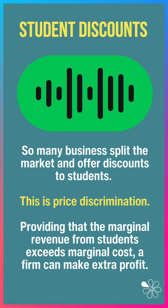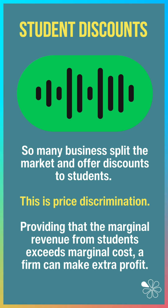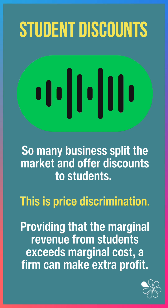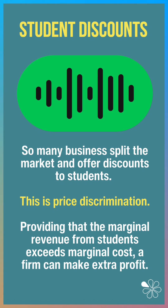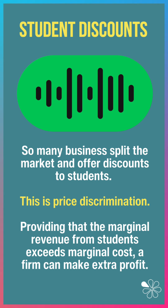This is third degree price discrimination. Providing the marginal revenue from students exceeds the marginal cost of supplying to them, a business can still make extra profit, turning consumer surplus into extra revenue.